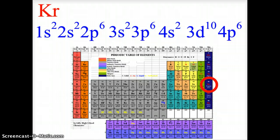These electron configurations are getting longer and longer, so there must be a shorthand way to write them. In the next video, we're going to talk about noble gas notation, also called core notation, which will give us a way to shorten these and make them easier to work with. Keep working on your chemistry!